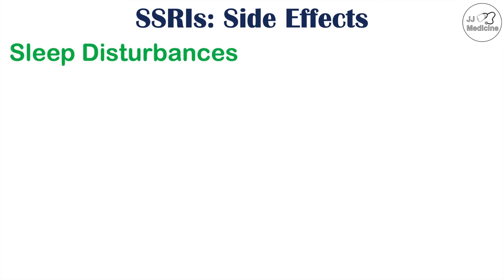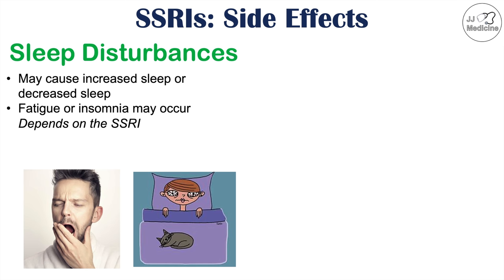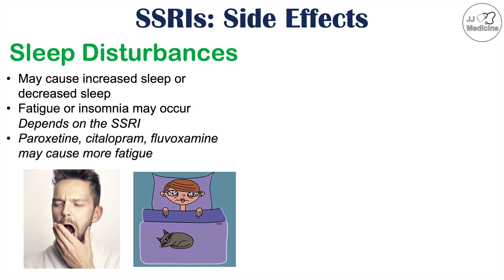SSRIs can also lead to sleep disturbances — either increased or decreased sleep depending on the SSRI. Fatigue or insomnia may occur, depending on which SSRI is being used. SSRIs that cause more fatigue include paroxetine, citalopram, and fluvoxamine. Some SSRIs can cause decreased sleep, oftentimes the ones that also cause restlessness.